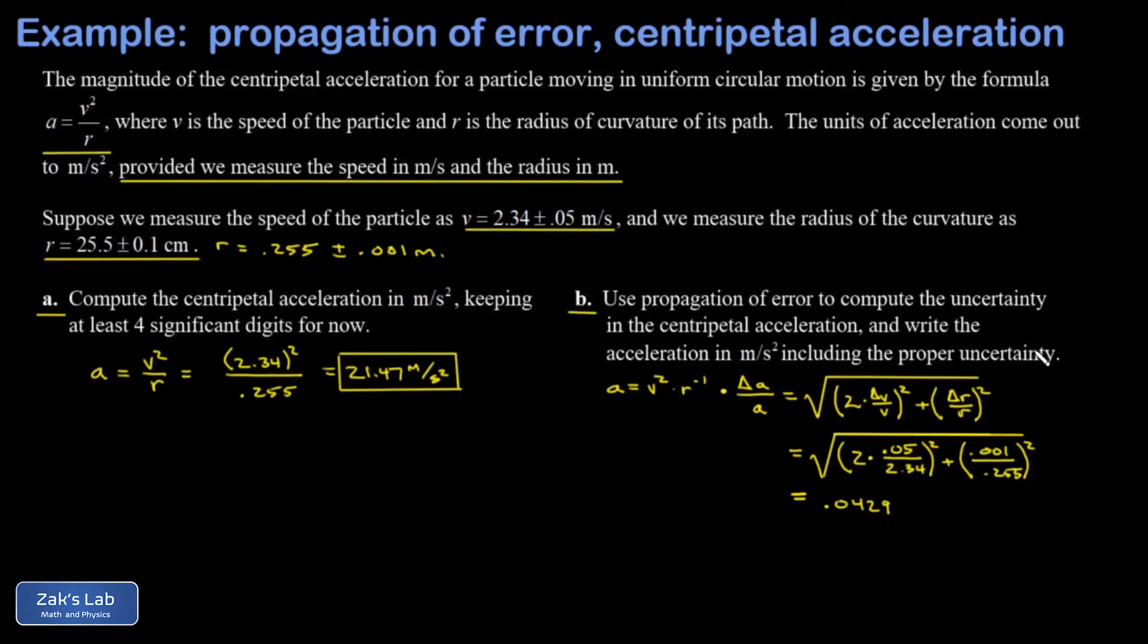This is actually telling you the relative uncertainty in a. In other words, if I shifted the decimal point two places, I'm talking about roughly a 4% error. I still have to find the uncertainty in a itself, and to get that done I multiply both sides by a.